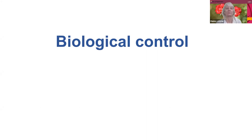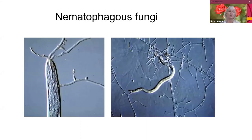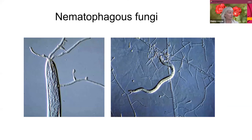Briefly onto biological control. There's something called nematode-trapping fungi — they might trap any nematode, until maybe somebody finds a nematode-trapping fungi that might just target root-knot nematodes, but at the moment there isn't one as far as I know.